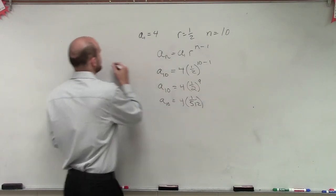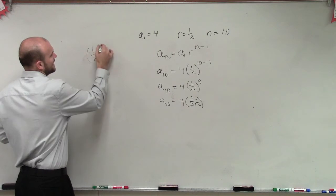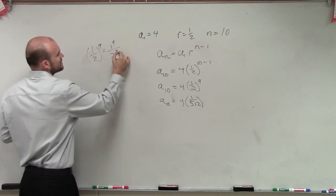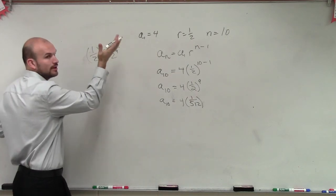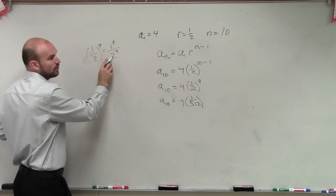Because remember, 1 half to the 9th is equal to 1 to the 9th over 2 to the 9th. Well, 1 to the 9th is just 1, right? So then it's 1 over 512.